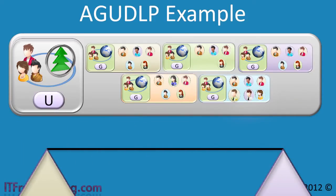So far, using AGUDLP we have been able to granularly divide up administrative control, reduce replication, and provide forest-wide control of resources.